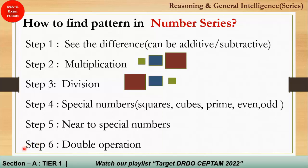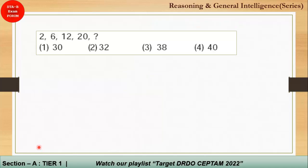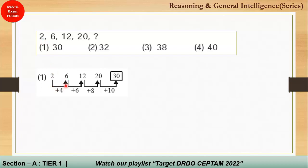Here is the first sample question. The difference between consecutive numbers is 4, then 6, then 8 — the difference is continuously increasing by 2. So the next difference should be 10, making the next term 30. The correct answer is 30.